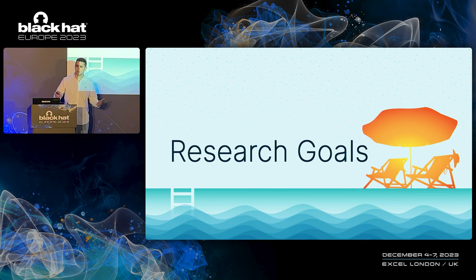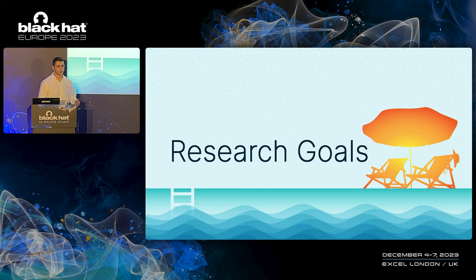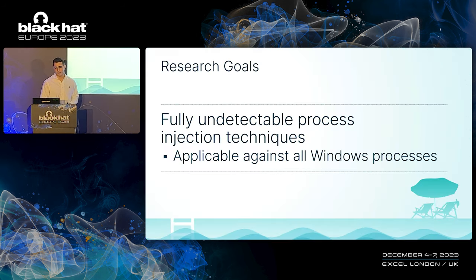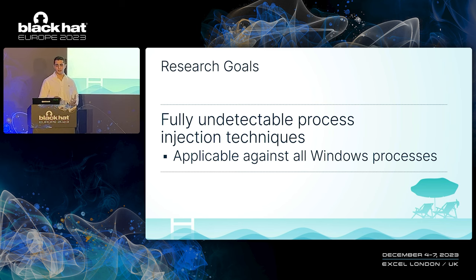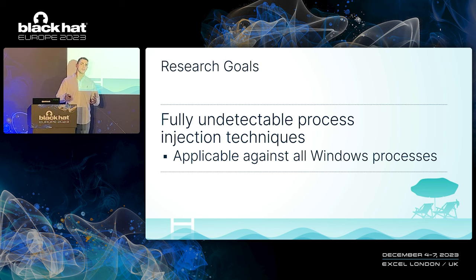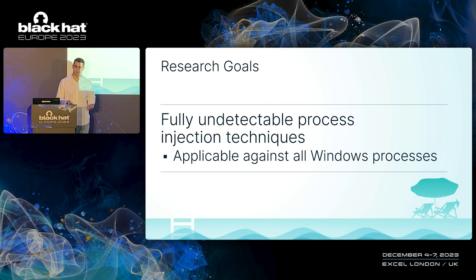The execution primitives are detected based on comparing the initiator versus the creator of an action. With better understanding of the detection approach, I could define the research goals. My ultimate goal was to find new and fully undetectable process injection techniques, and I wanted it to be applicable against all Windows processes, with no prerequisites whatsoever.